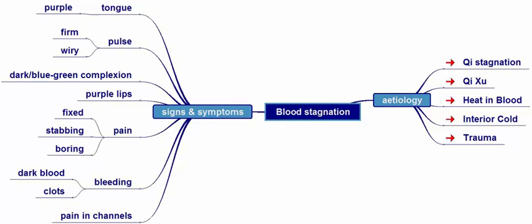Blood stagnation can be due to a number of causes. As qi moves blood, if qi stagnates then blood will also stagnate. Similarly, a deficiency of qi would result in there not being enough qi to move blood, and hence cause the blood to stagnate.